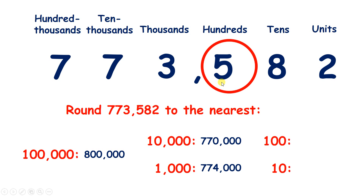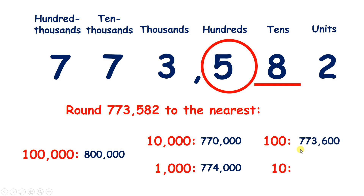Now rounding to the nearest 100, if we look to the right we have an 8 — so we need to raise the score: we need to change that 5 to a 6. Then if we put zeros to the right, that gives us 773,600.